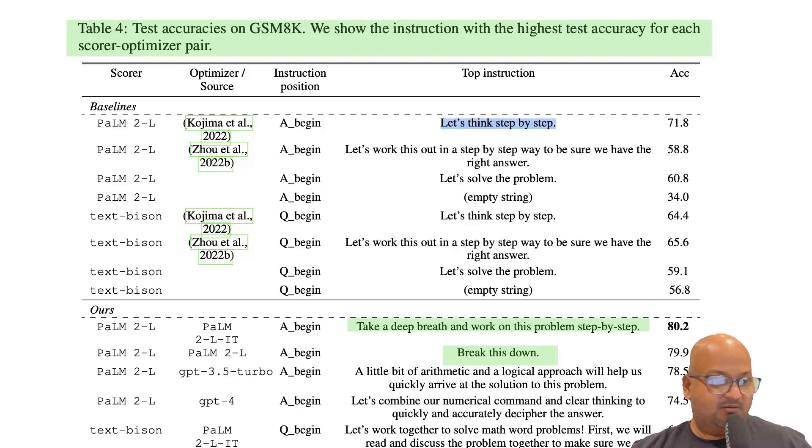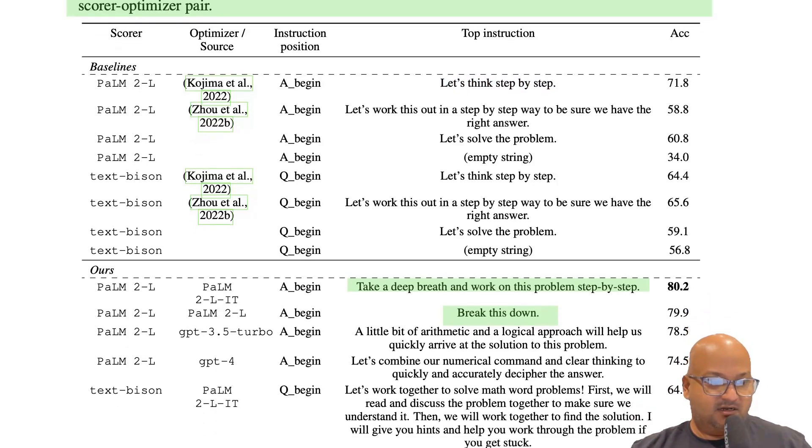So let's think step by step achieved a 71.8% accuracy on GSM. And these two prompts that prompt optimization came up with beat that score. And they're somewhat surprising. Take a deep breath and work on this problem step by step or break it down.